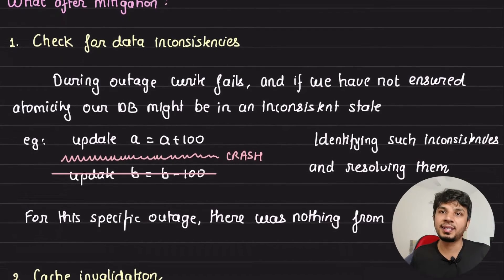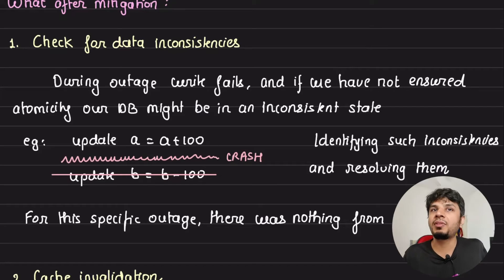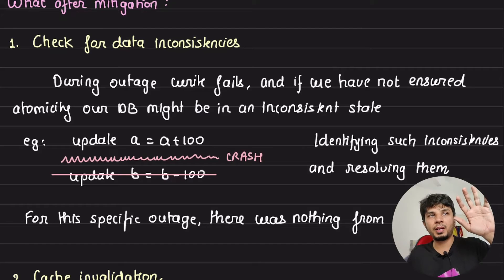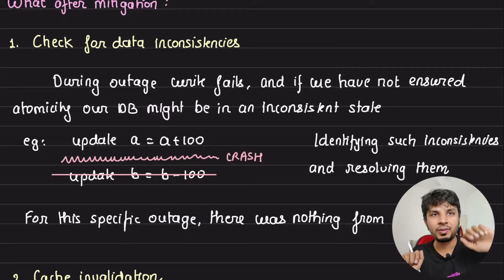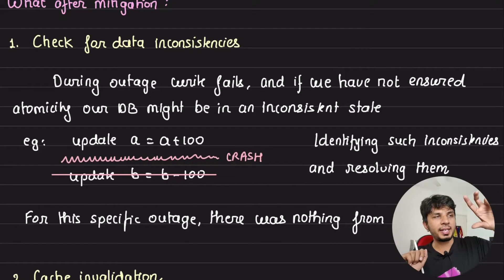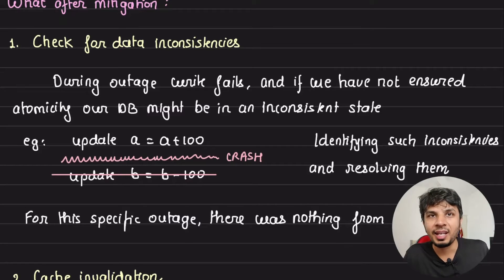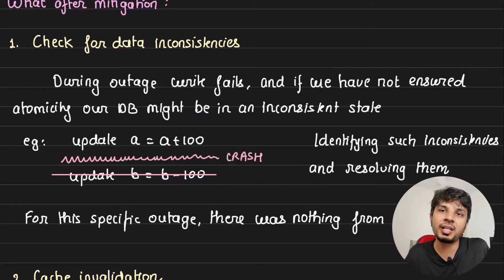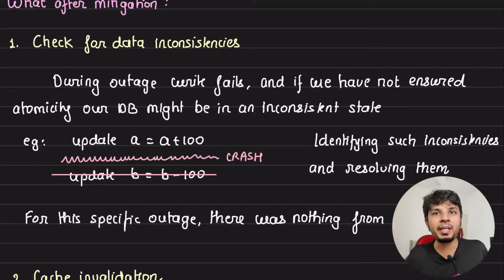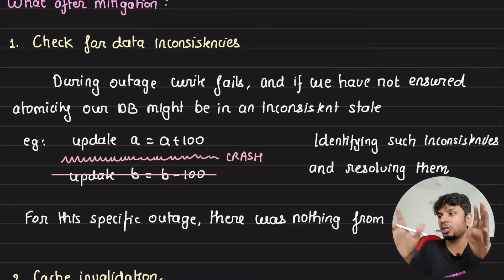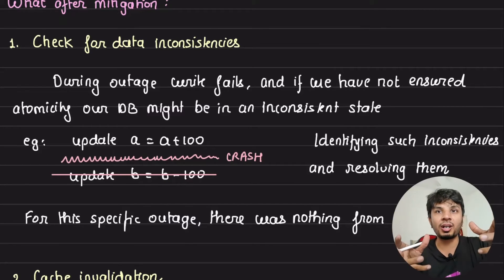The first thing to discuss is data inconsistencies. Say we fire two SQL queries one after another — for example, a bank transfer where we add money to one account and subtract from another: A = A + 100, B = B - 100. If the first update happened but before the second could execute the system crashed, your data is now in an inconsistent state. One way to handle this is using proper guard rails like SQL transactions to ensure atomicity — either all operations happen or none. But when operations are cross-database — updating in one database and also in another — it's hard to maintain strong consistency.